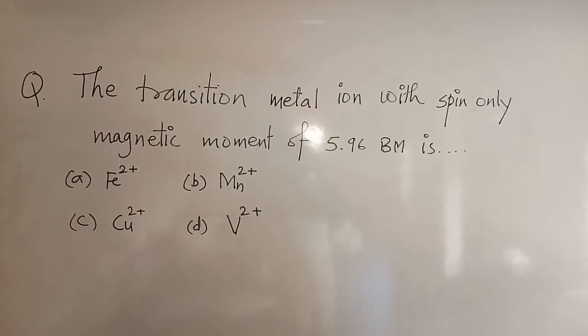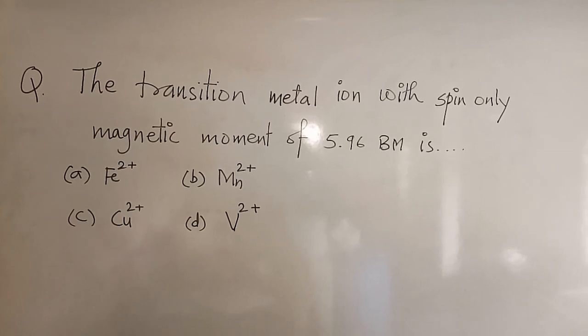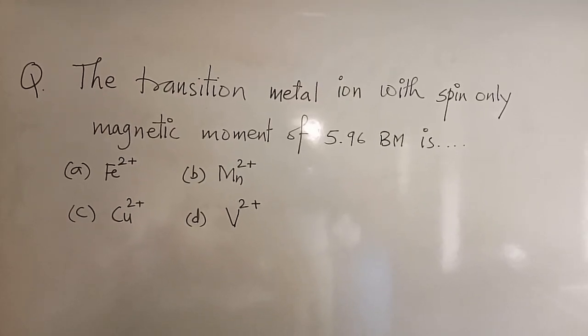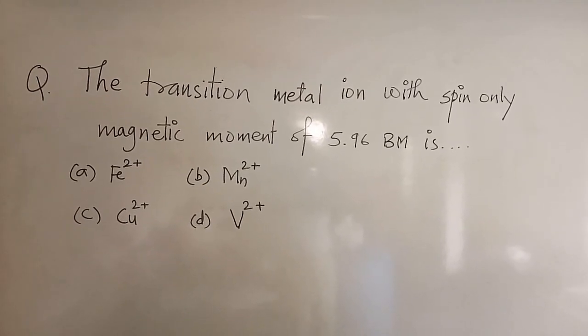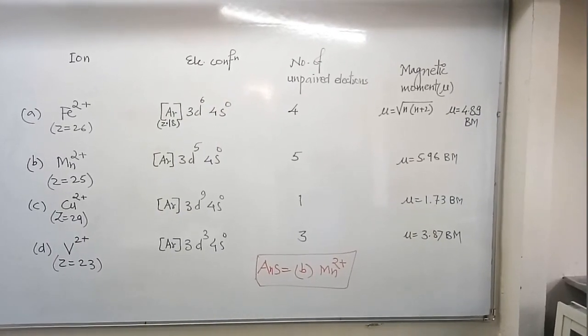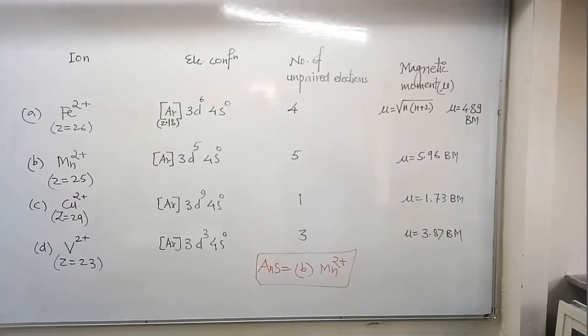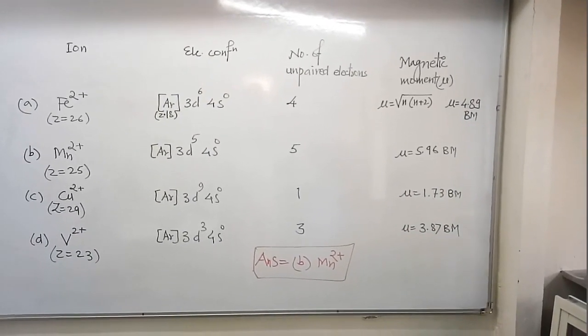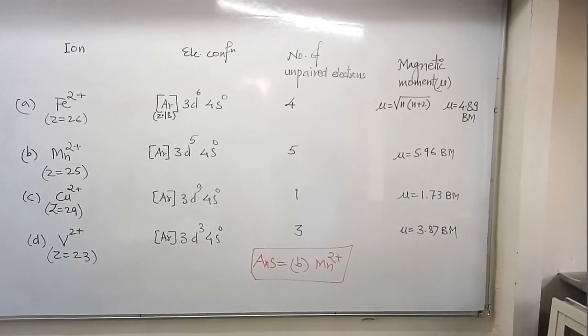Question is the transition metal ion with spin only magnetic moment of 5.96 BM is. The correct option of this MCQ is B, Mn2+.